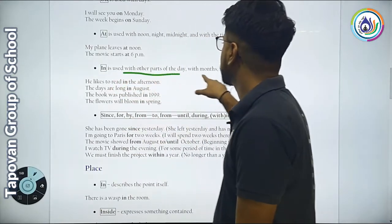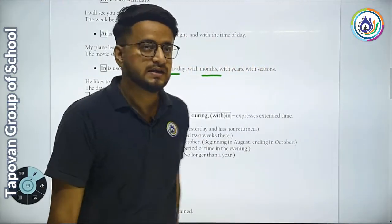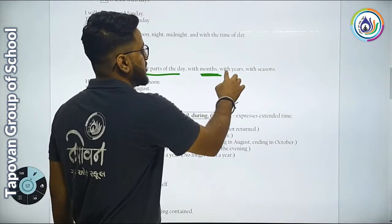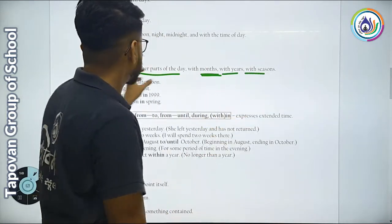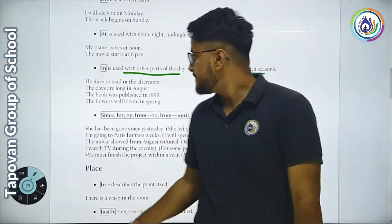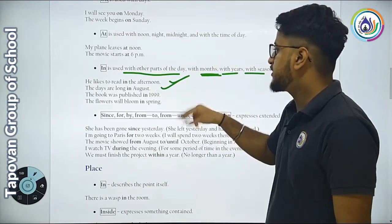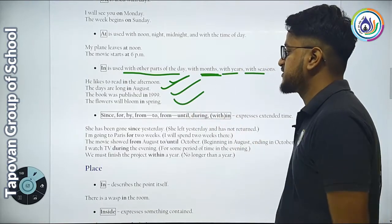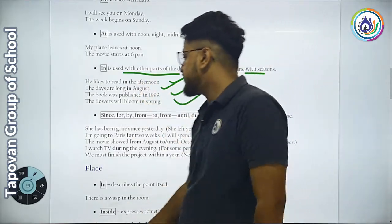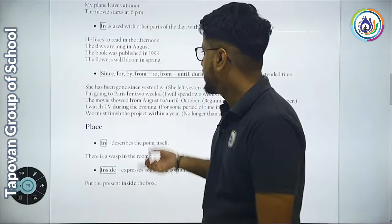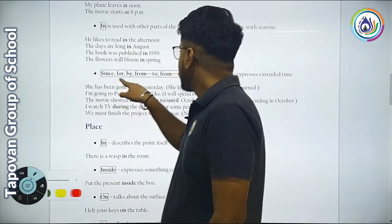In is used with other parts of the day, with months, with years, with seasons. He likes to read in the afternoon. The days are long in August. The book was published in 1999. The flowers will bloom in spring.